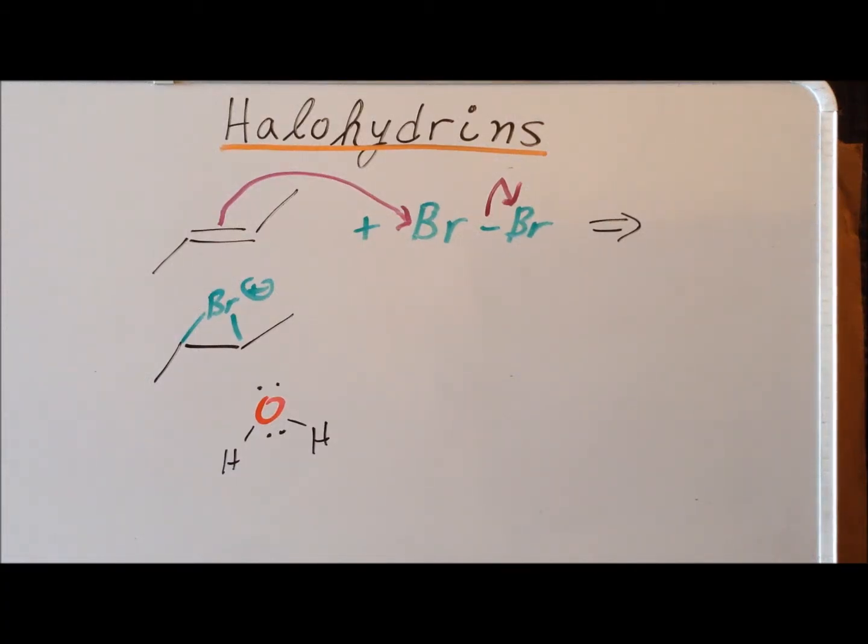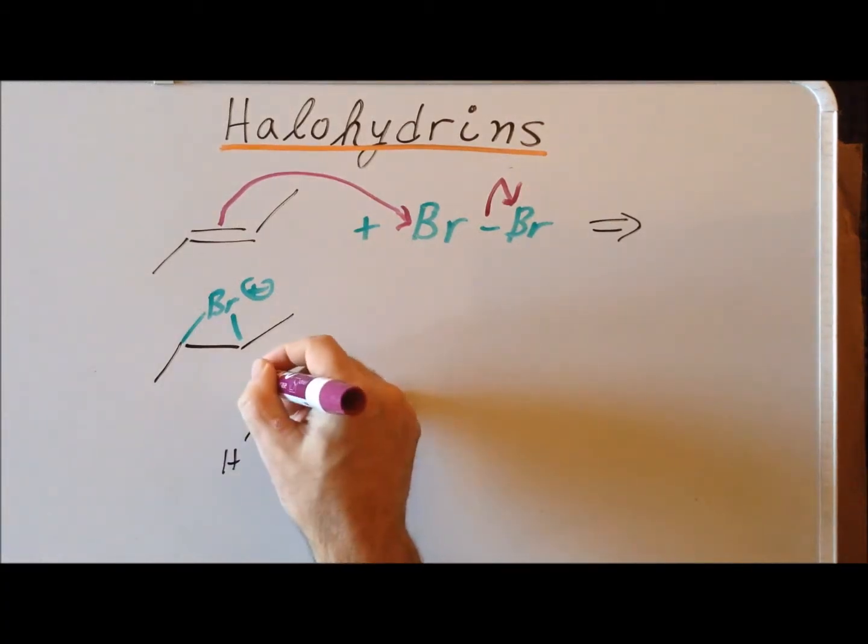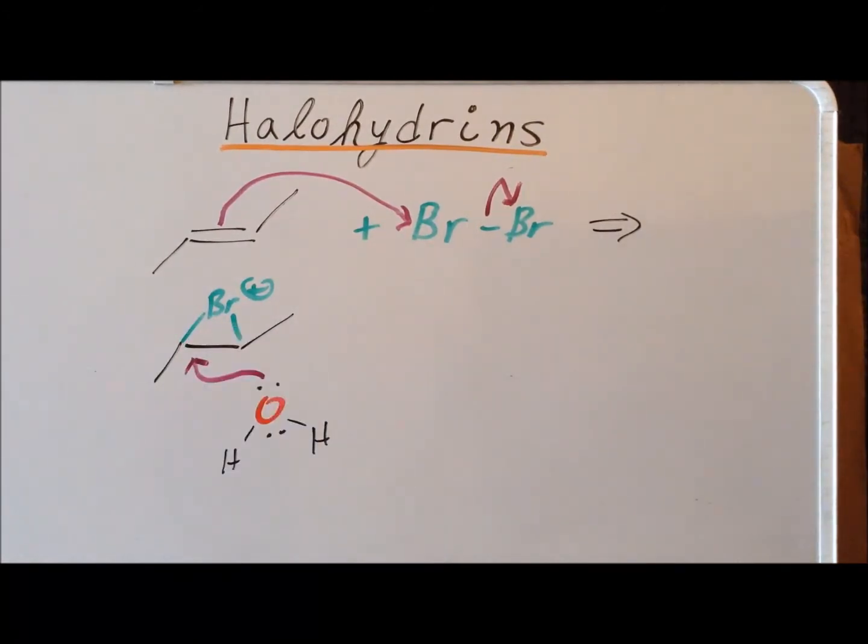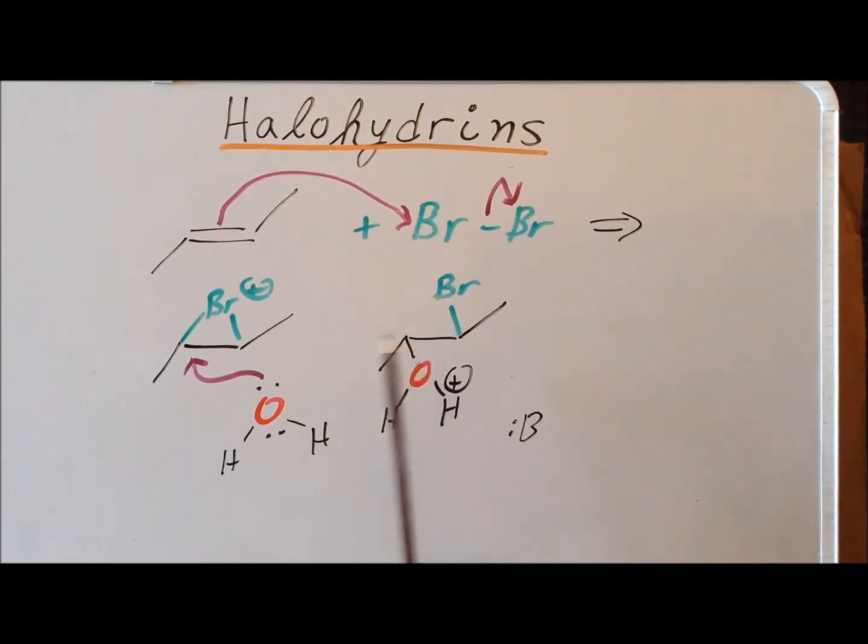Next we have anti-attack from the water molecule attacking one of the two carbons of the three-membered ring. Both carbons are identical, so it doesn't matter in this case to which one it adds. The protonated alcohol functionality has attached to this particular carbon.